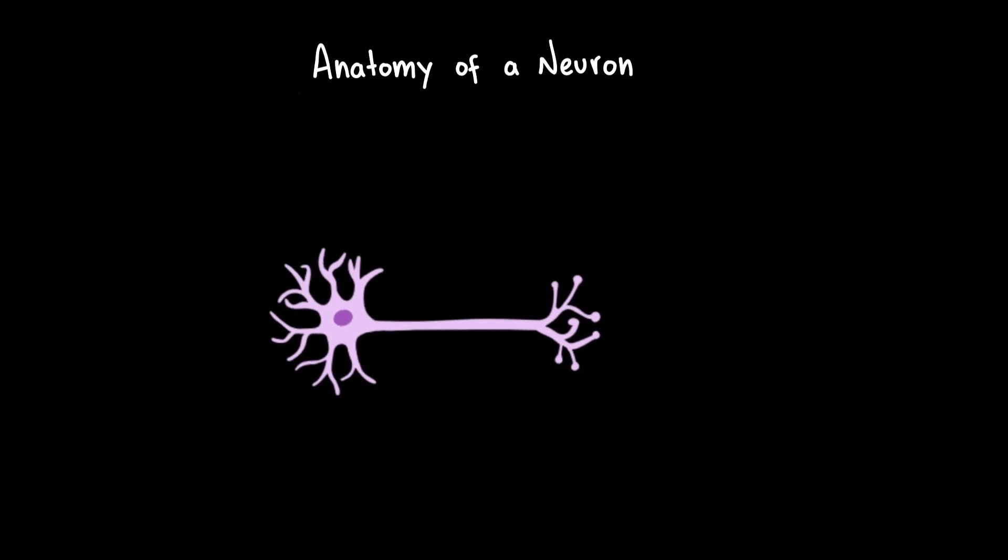Let's zoom in on the neuron itself. A neuron is the basic functional unit of the nervous system. It has a cell body, which contains the nucleus and the metabolic machinery that keeps the cell alive. Extending from the cell body are the dendrites, short, branch-like structures that receive incoming signals from other neurons. From there, we have the axon, a long projection that carries electrical signals away from the cell body.